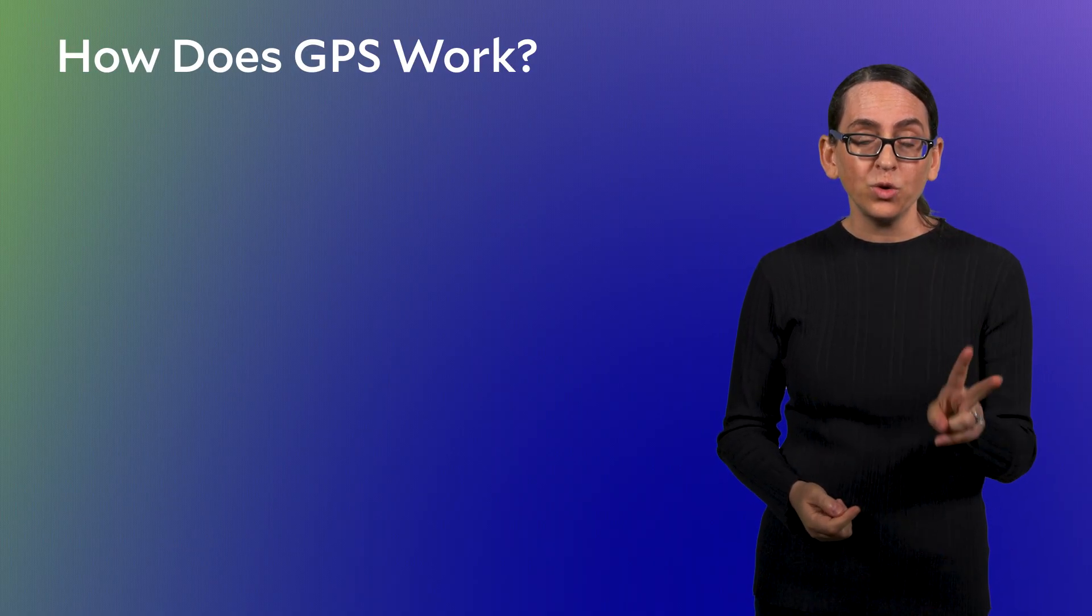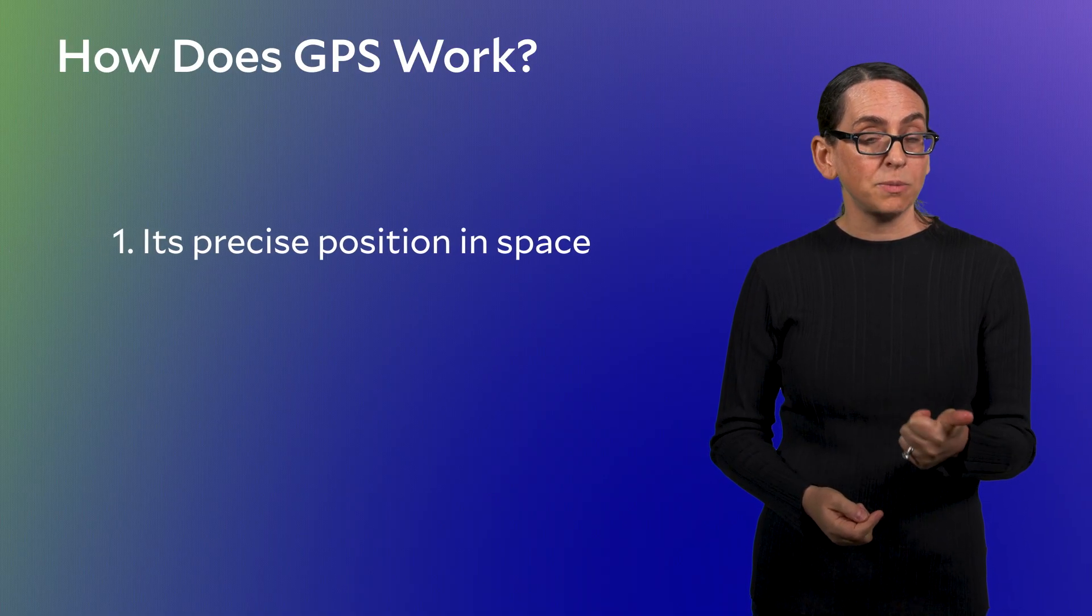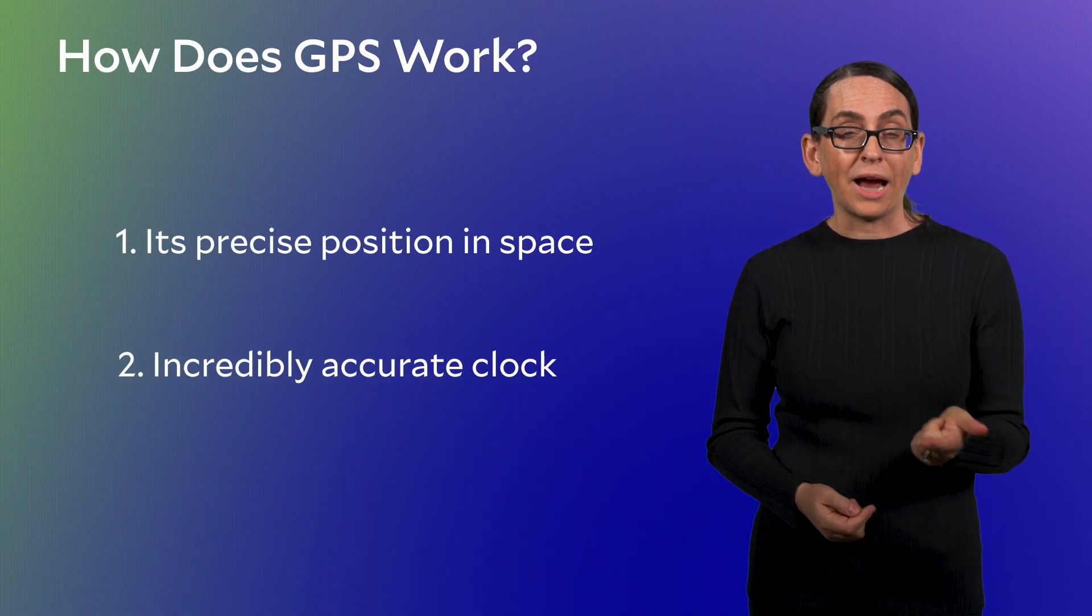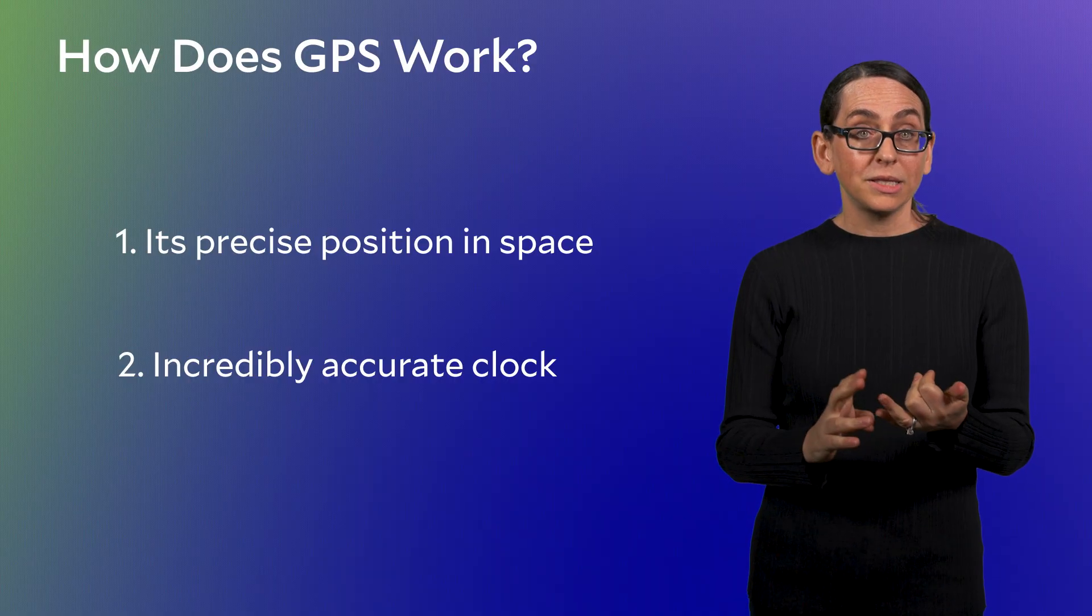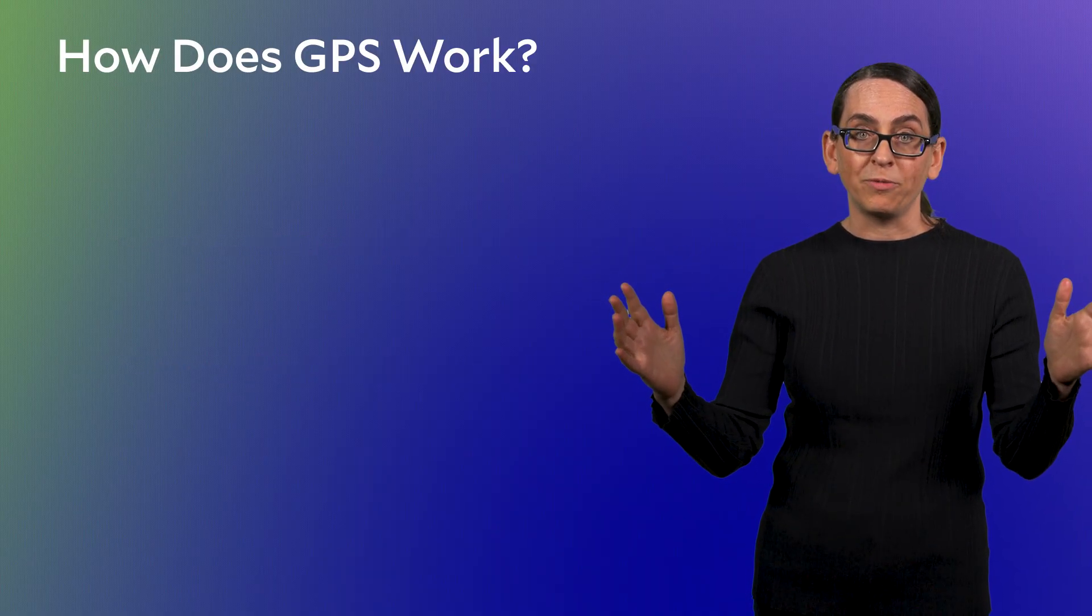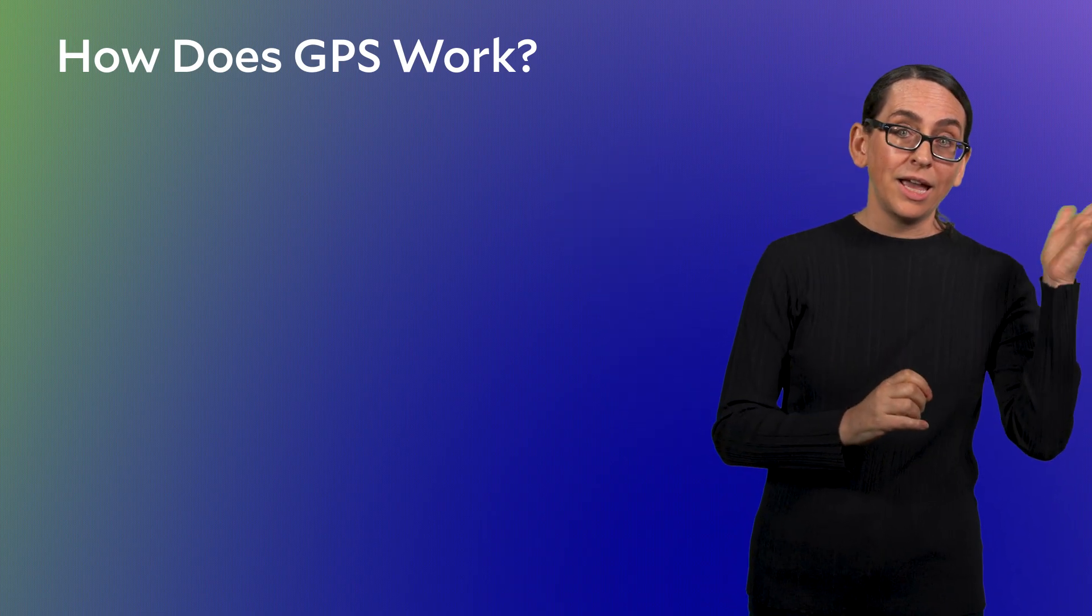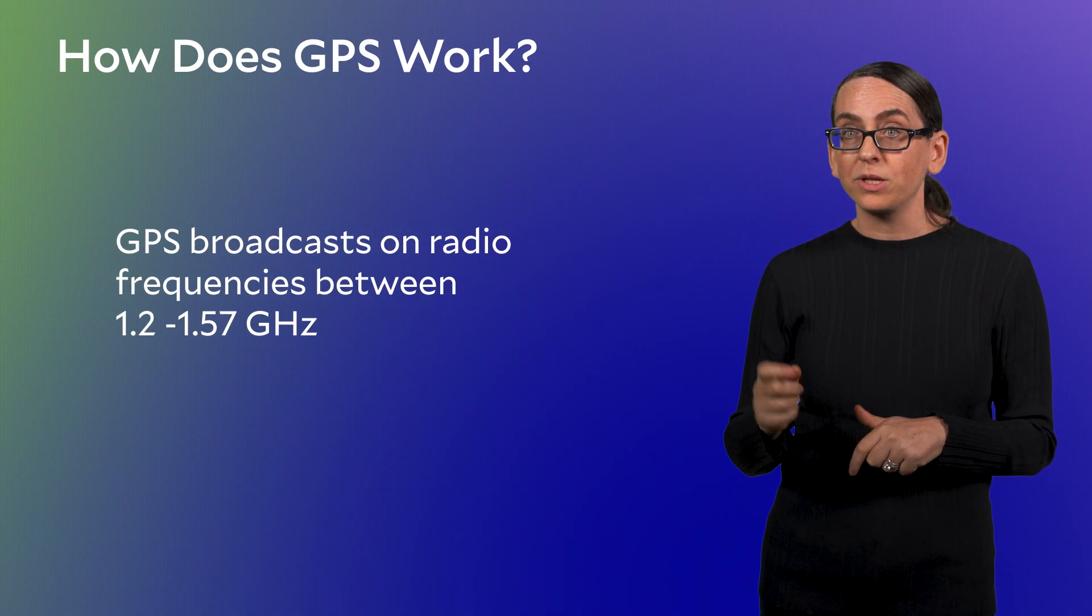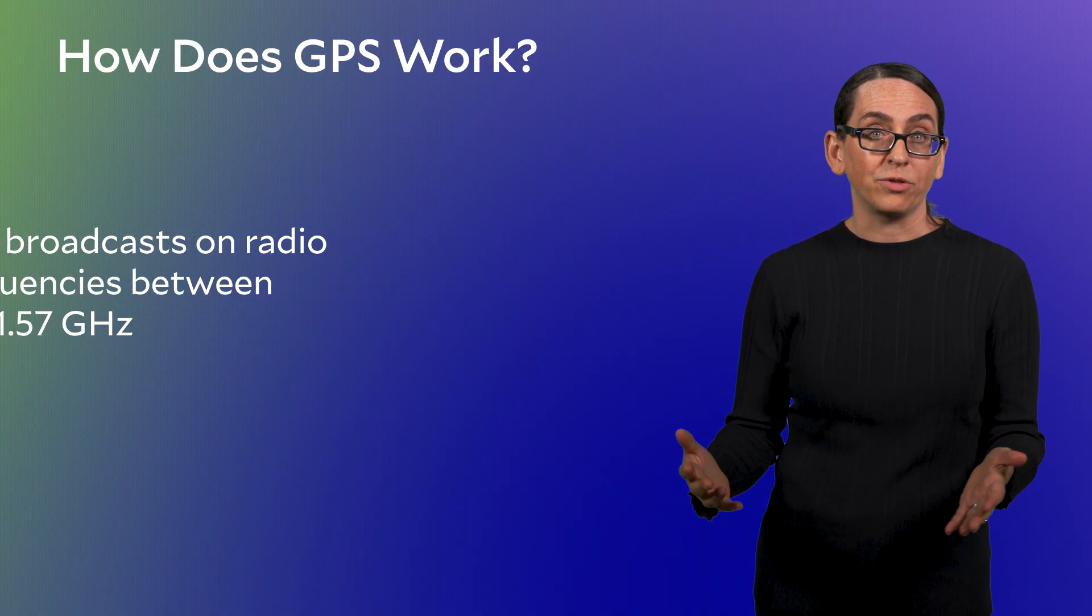What a GPS satellite itself does is actually sort of simple. Each satellite knows two things very well: it knows its position in space precisely, and each satellite has an incredibly accurate clock. It knows where it is and what time is it. The satellite is constantly broadcasting a radio signal with this information. So like, hey, it's five o'clock and I'm over here. A second GPS satellite is like, hey, it's 5:15, I'm over there, and so on. For the curious, GPS uses a few different radio frequencies between 1.2 and 1.57 gigahertz to broadcast this information.